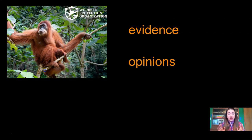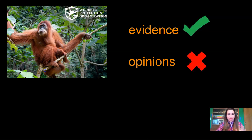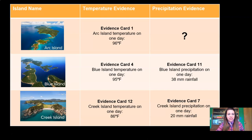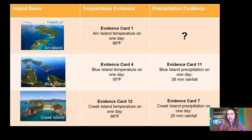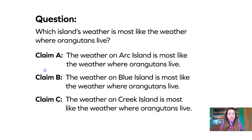We have three claims and we need to decide which one we're going to recommend to the Wildlife Protection Organization. When we make our recommendation, we need to make sure that our argument is supported by evidence, not by opinions. Let's take a look back at our data chart. Arc Island has a very hot temperature of 96 degrees Fahrenheit — remember that chocolate melts at 93 degrees Fahrenheit, so it's a really hot place. But we didn't have any precipitation evidence for Arc Island, which made it really difficult to compare. Do we have enough evidence to support Claim A?